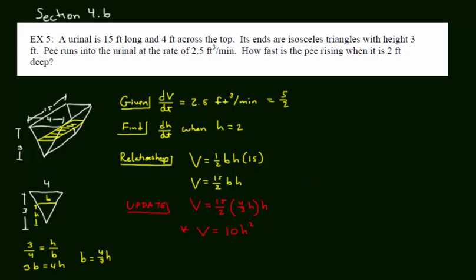We are ready to go through our process: finding the derivative and then substitution. We have dV/dt equals 20h times dh/dt. We're ready to substitute values. 5/2 is the given dV/dt. 20 times, at a snapshot in time, the height is 2. And it is at that time we want to find dh/dt.